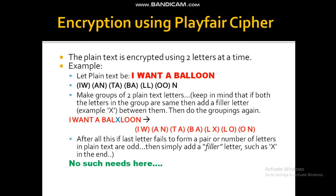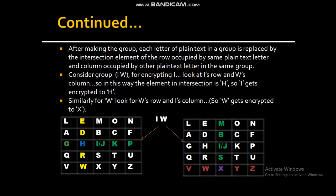Here we can notice 2 things. Number 1: the letters of two groups, LL and OO, are the same — one needs to avoid this. So for that, add a filler letter X in the middle of the two L's and rewrite the text. It would become: I W A N T A B A L X L O O N. Now start grouping them again: IW, AN, TA, BA, LX, LO, ON will be the groups. All problems are solved. Another possibility is that the last letter has no letter to pair up — in such a case, just add a filler letter X at the end. But for this example, no such need exists.